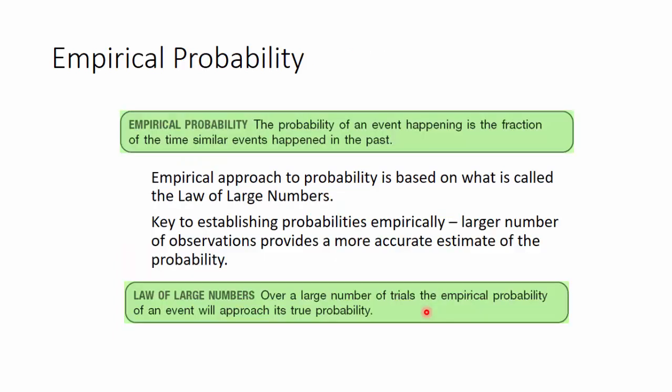Empirical probability also relies heavily on large amounts of numbers because it depends on the amount of data that has been collected. So it's based on the law of large numbers. What is this law of large numbers? It says over a large number of trials, the empirical probability of an event will approach its true value.